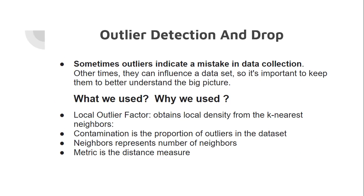I am Merti San. We detect outliers and drop them. Sometimes outliers indicate a mistake in data collection; other times they can influence a dataset, so it is important to keep them to better understand the big picture. We use local outlier factor. It obtains local density from the nearest neighbors. The contamination parameter is the proportion of outliers in the dataset, neighbors represents the number of neighbors, and metric is the distance measure.